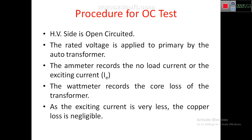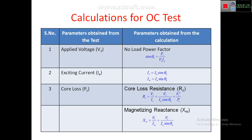We read all three meters and then proceed with the calculations. For the OC test, I have divided results into two parts: parameters obtained from the test and parameters obtained from calculation. From the test we know the applied rated voltage V1, the exciting current IE measured by the ammeter, and the core loss PC obtained from the wattmeter reading.